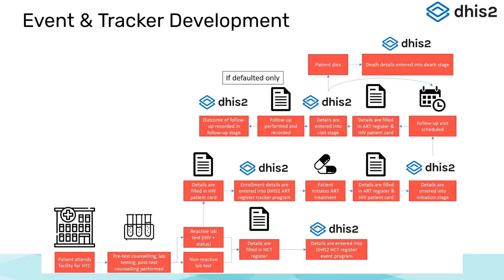The diagram shown here is an example tracker data flow for HIV testing and counseling, along with registering HIV-positive cases into ART. We can see there are many steps in the workflow of this program, which may be modified individually depending on the context this is being implemented in.